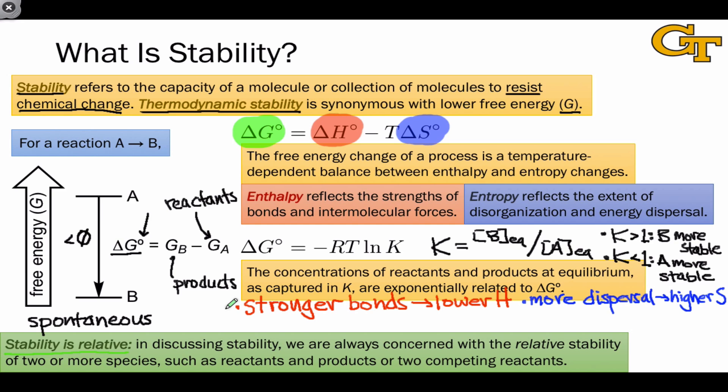In practice, we're most often interested in the relative stability of, for example, reactants and products in a chemical reaction, or two competing reactants within the same reaction, or two potentially competing products that could be formed from the same starting material. Because stability is relative and we're always making comparisons, we tend to think about stability using trends.